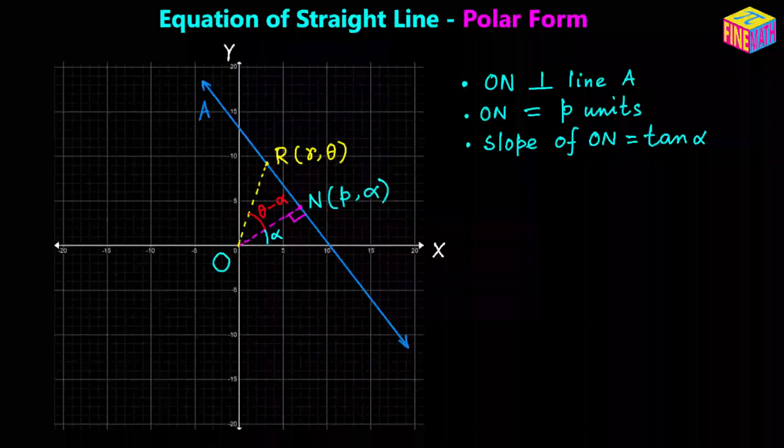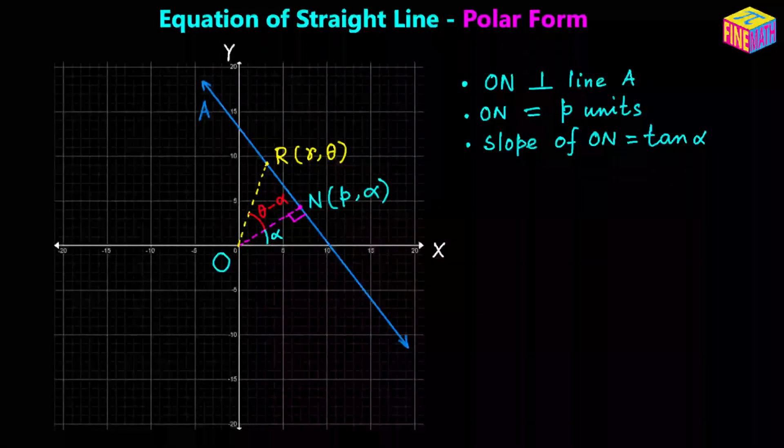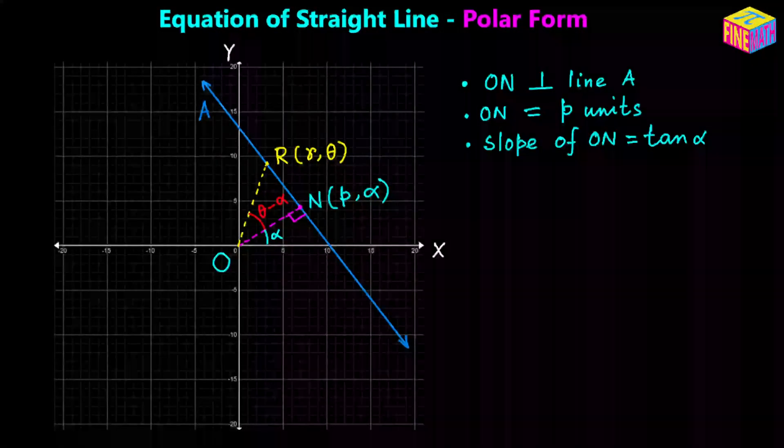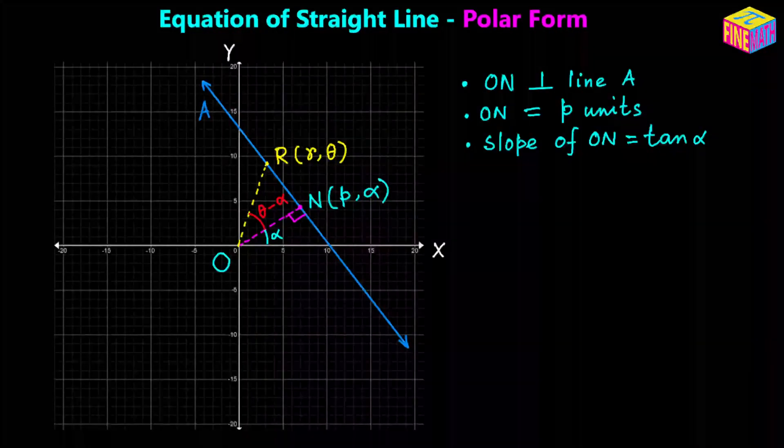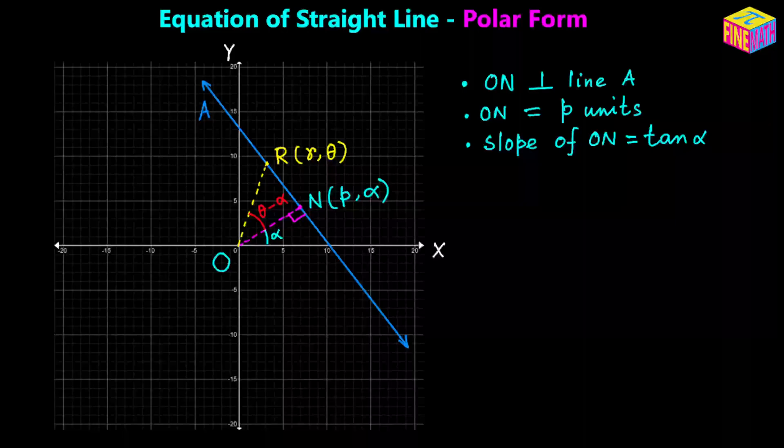Hi everyone. In this video we are going to discuss another form of equation of a straight line, which is the polar form. In the diagram we have a straight line A, and we have to determine the equation of that straight line with some of the information that has been provided.